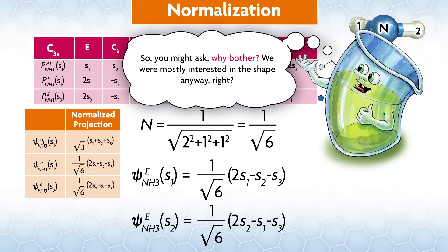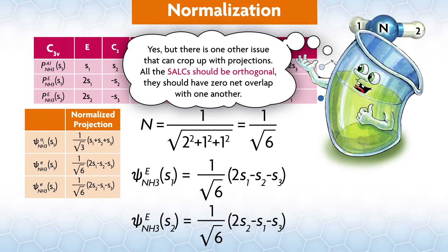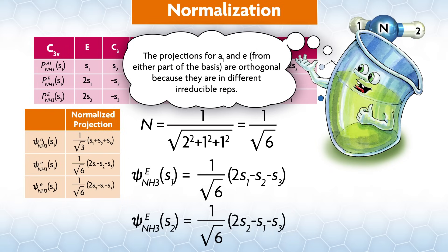So you might ask, why bother? We were mostly interested in the shape anyway, right? Yes, but there's one other issue that can crop up with the projections. All the SALCs should be orthogonal. They should have zero net overlap with one another. The projections for a1 and e, from either part of the basis, are orthogonal because they are in different irreducible reps. However, the two SALCs from the projection on s1 and s2 within e aren't necessarily orthogonal.